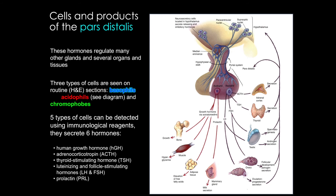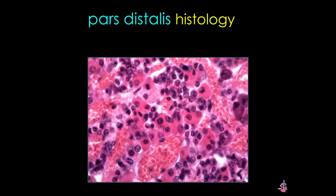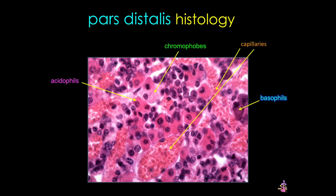Now let's look at the histology. In this H&E stain section, you can appreciate the acidophils, the basophils, and the pale-staining chromophobes. In addition, take note of the extensive capillaries, most of which are fenestrated to facilitate release of hormones into the blood.